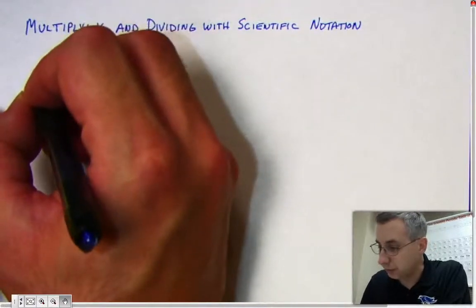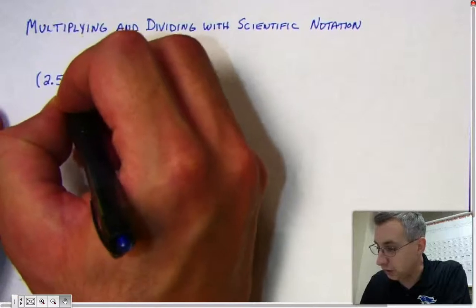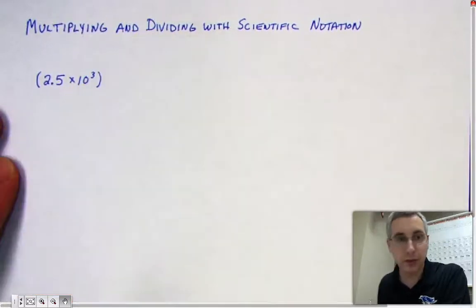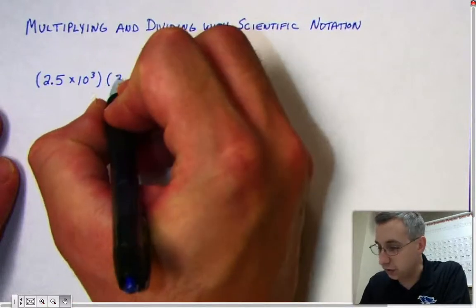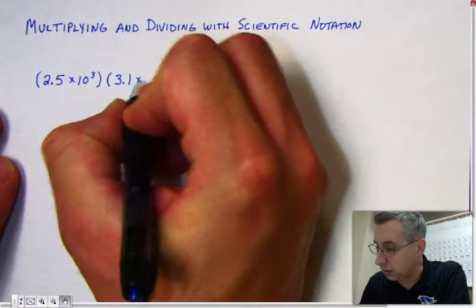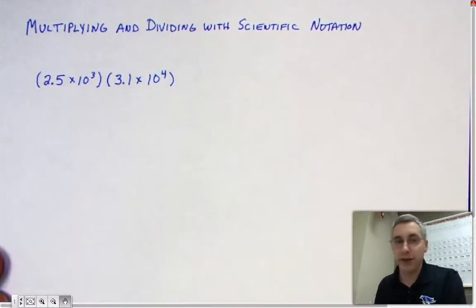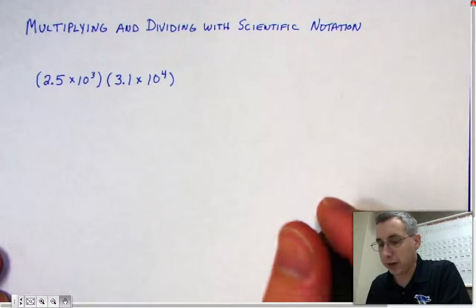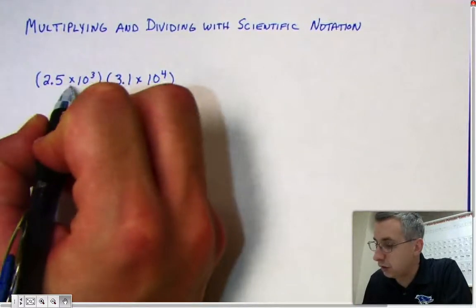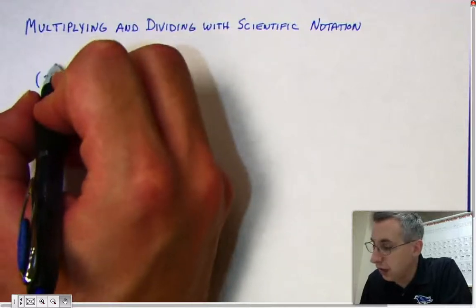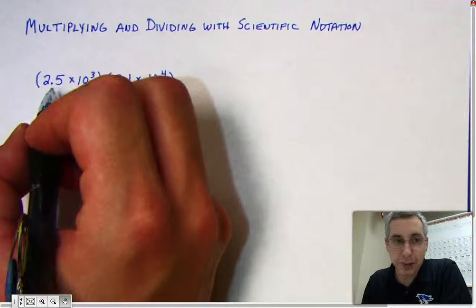Here's an example. Let's say we have 2.5 times 10 to the third, and we're multiplying it by another number in scientific notation, 3.1 times 10 to the fourth. There's a pattern you want to follow when you multiply like this. Remember that the number that comes in front of the times 10 has to be 1 or higher, all the way up to 10, but it cannot be 10.